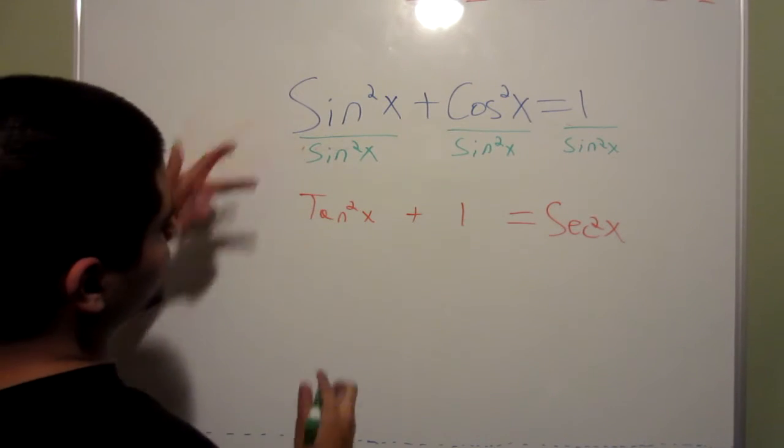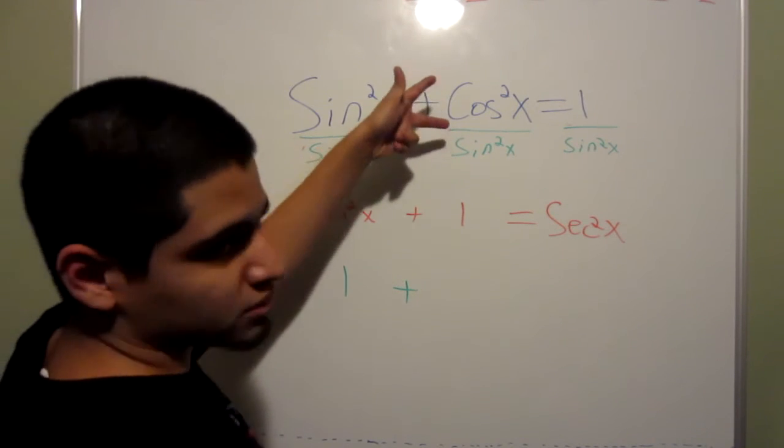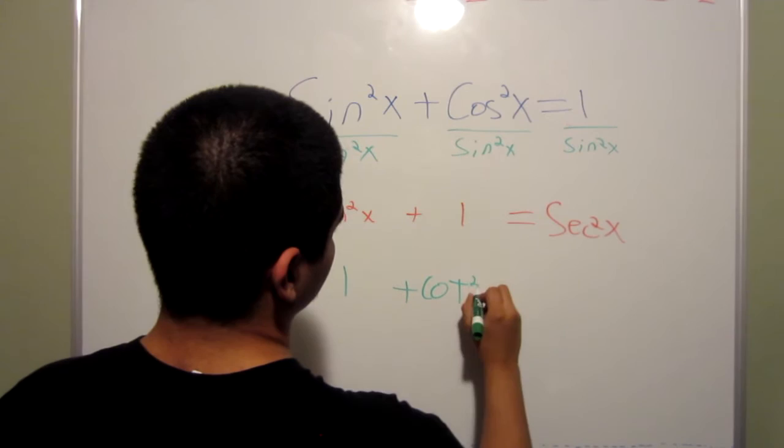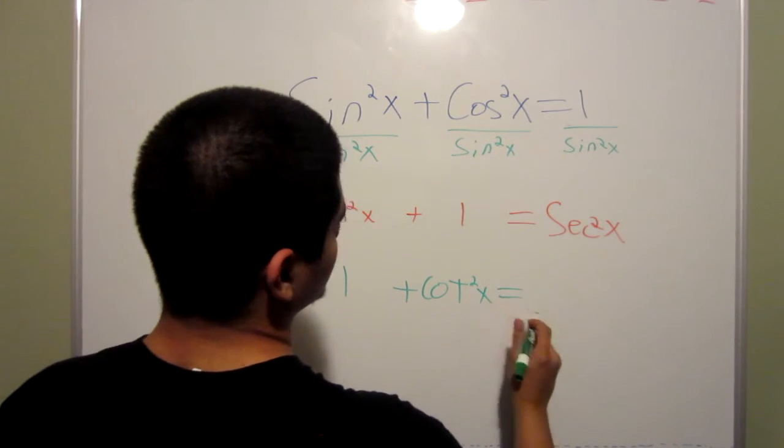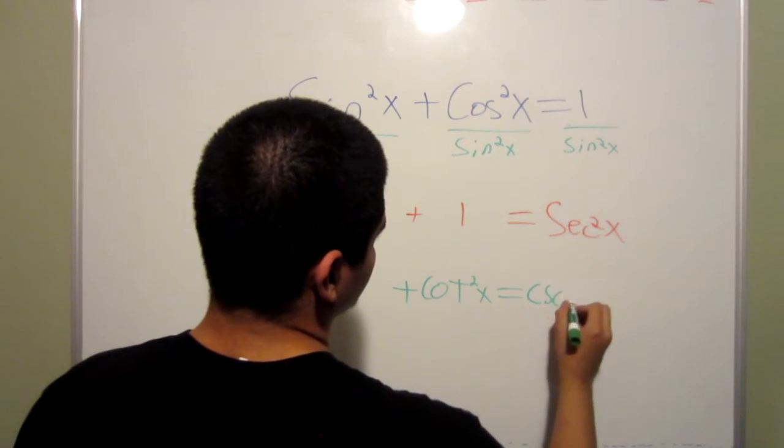Plus cotangent is the same thing as cosine over sine. So, you would get cotangent squared x, equals, and 1 over sine is the same thing as cosecant.